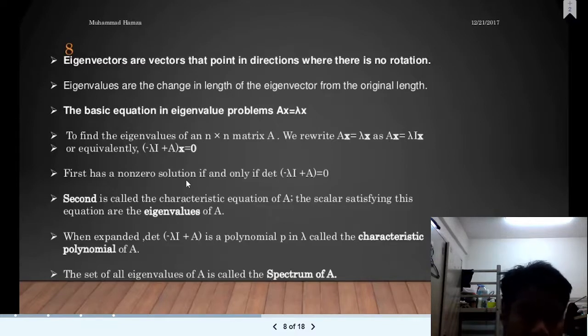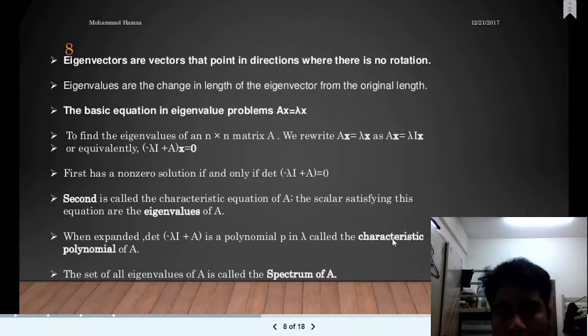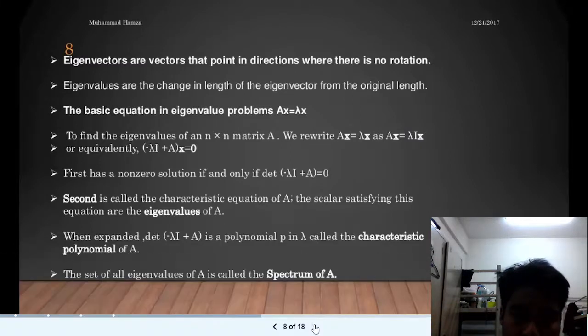The basic equation in eigenvalue problems is AX equals lambda X. To find the eigenvalues of an n by n matrix A, we rewrite the equation as (A minus lambda I)X equals zero. First, this has a non-zero solution if and only if the determinant of (A minus lambda I) equals zero. Second, this is called the characteristic equation of A. The scalar satisfying this equation are the eigenvalues of A. When expanded, the determinant is a polynomial p in lambda called the characteristic polynomial of A. The set of all eigenvalues of A is called the spectrum of A.